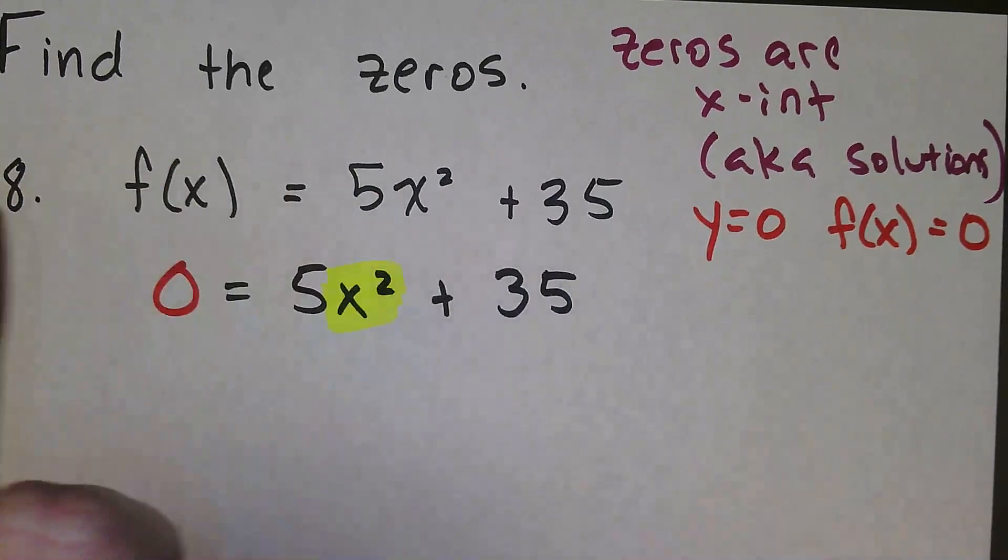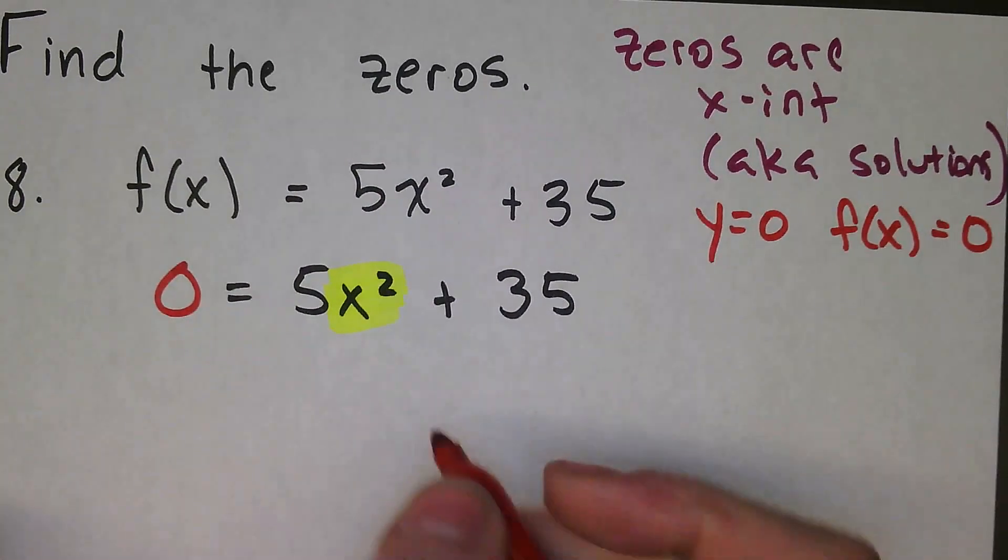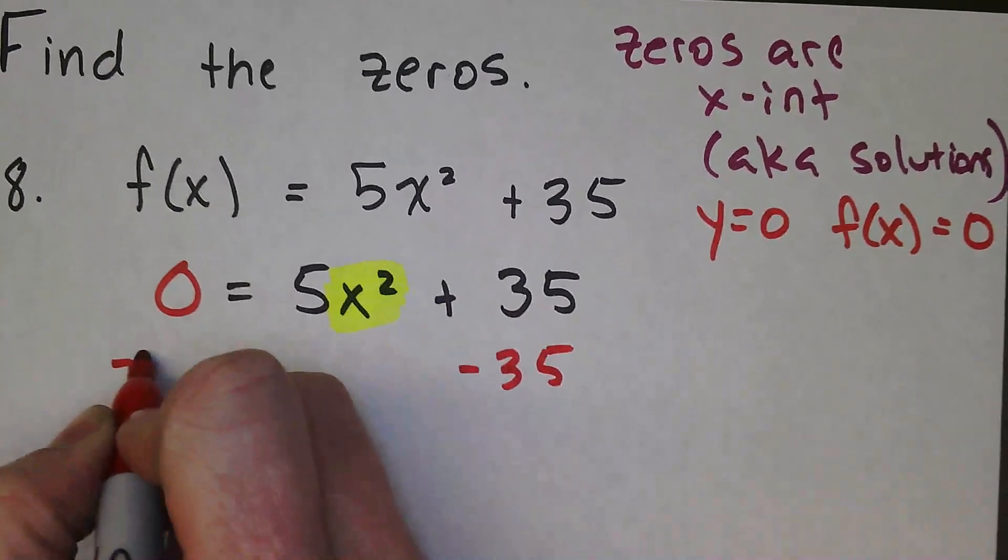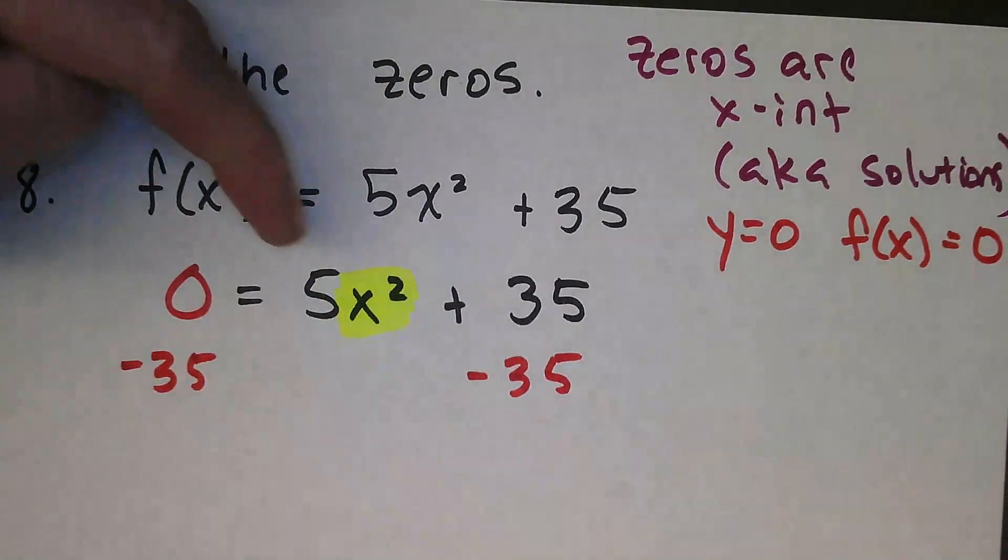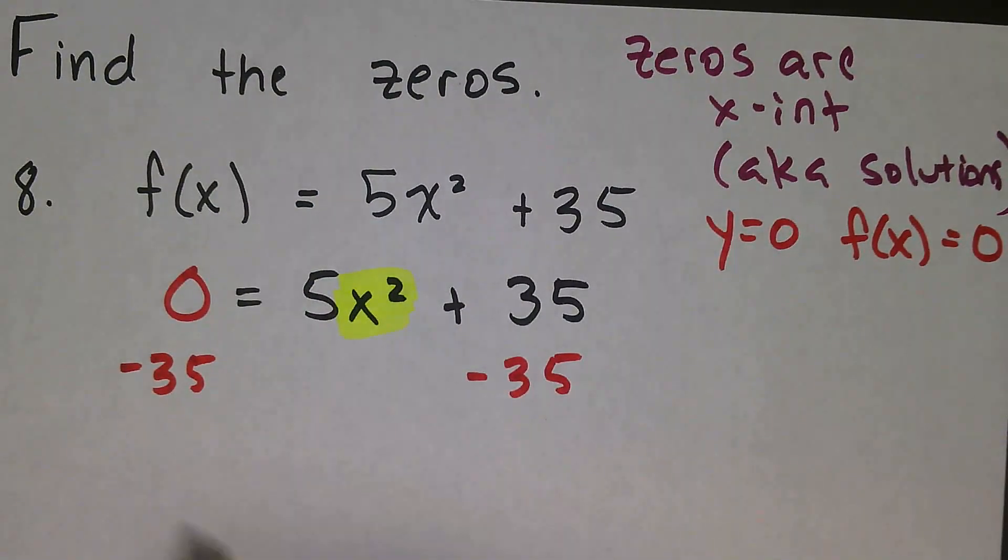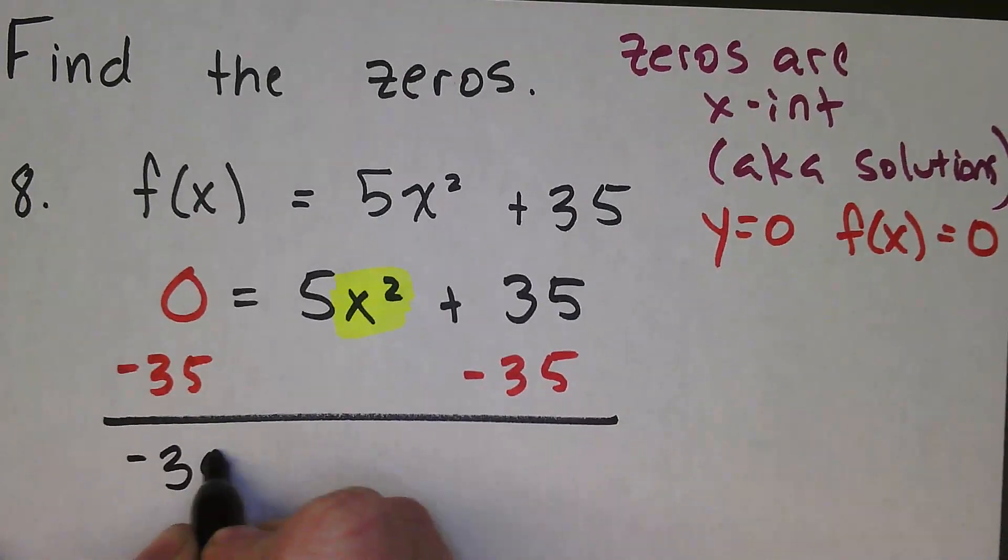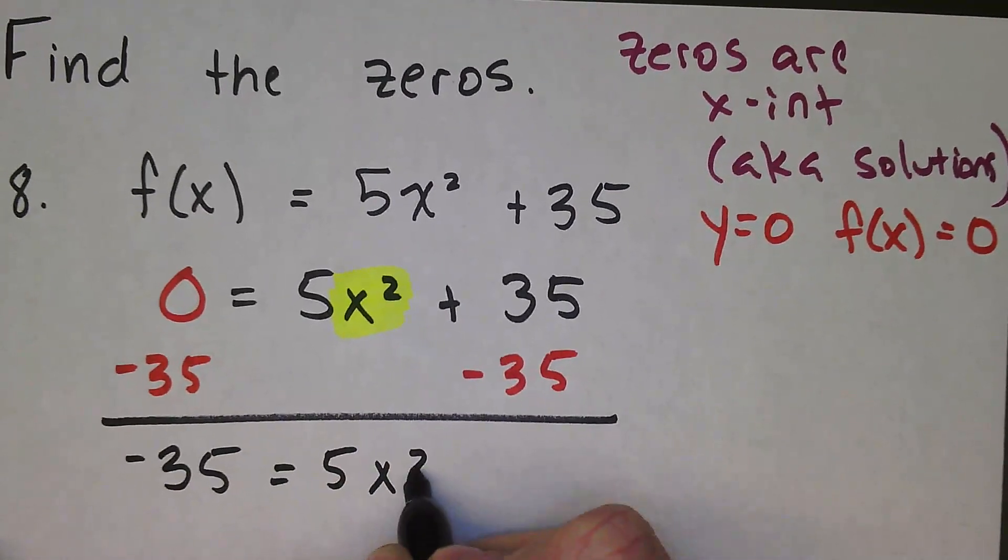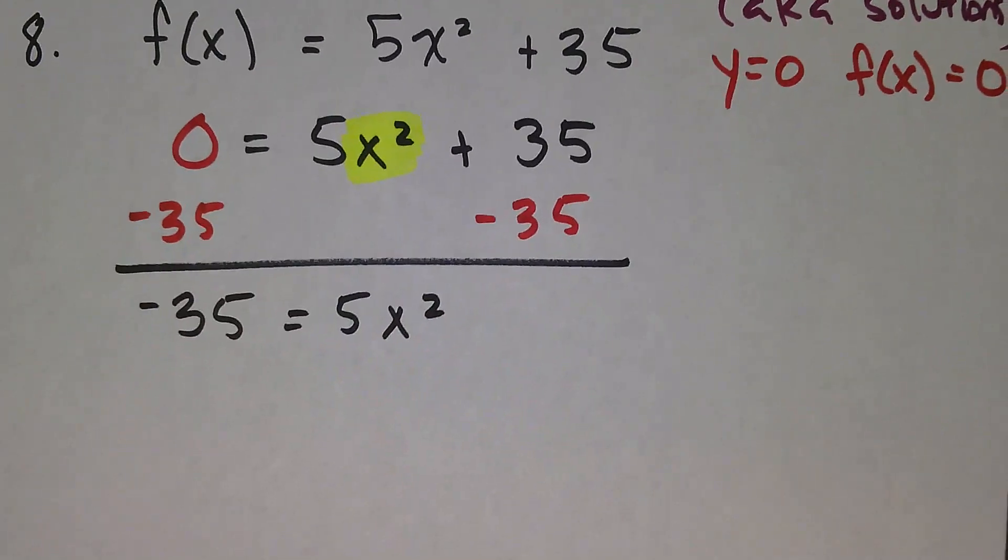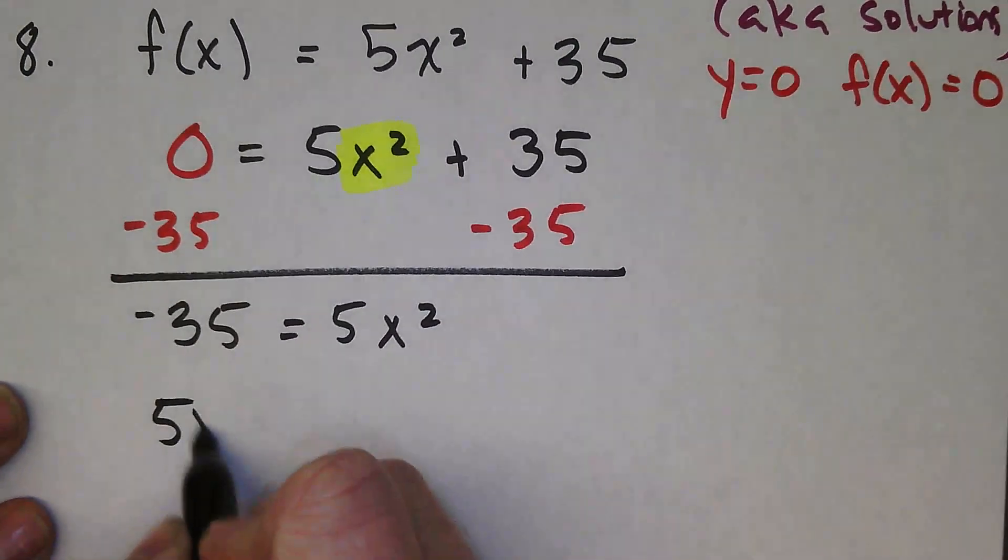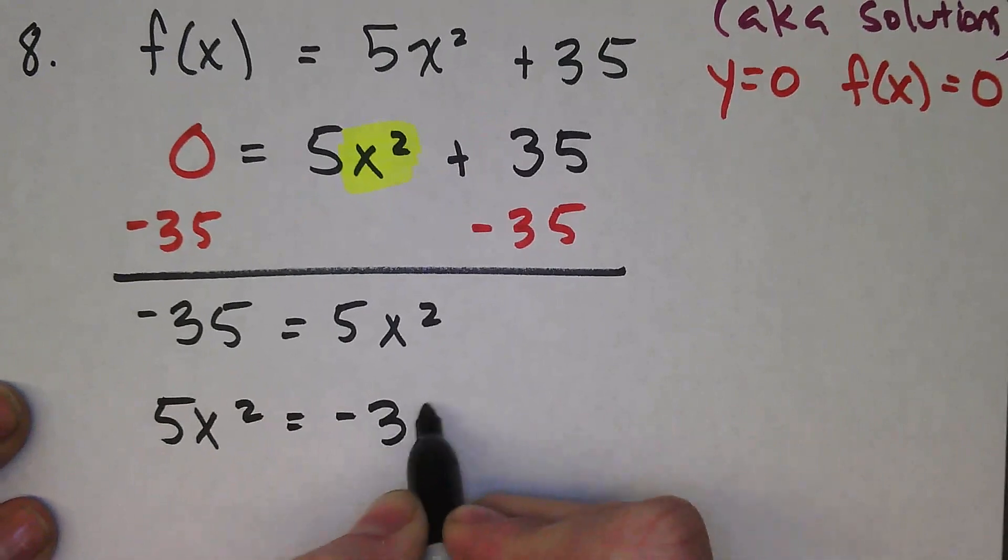All I have to do is move that 35 to the other side, so we'll subtract 35 from both sides. Then I'll divide by 5 and undo the square. We get -35 = 5x². I'm going to do a little switcheroo with the left and right sides, so 5x² = -35.